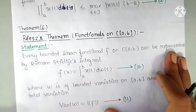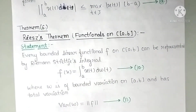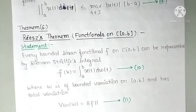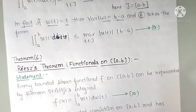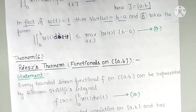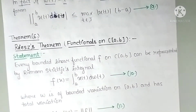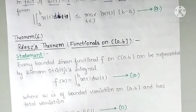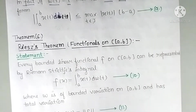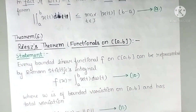Now we come to the statement of the Riesz theorem. In the exam, if this theorem appears, the basic definitions we have covered so far (up to equation 9) must be written as-is before beginning the proof.